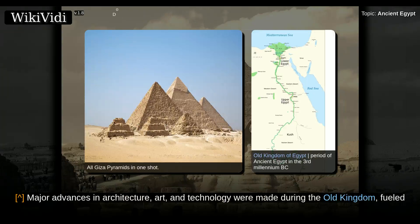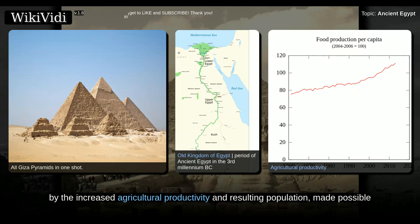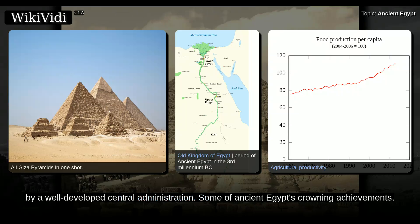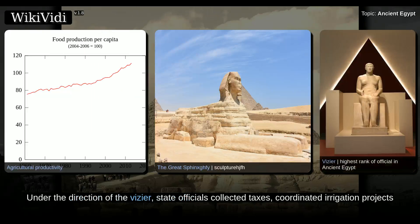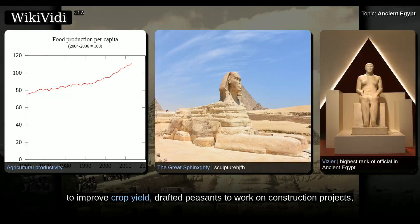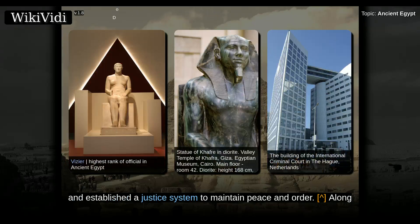Major advances in architecture, art, and technology were made during the Old Kingdom, fueled by the increased agricultural productivity and resulting population, made possible by a well-developed central administration. Some of ancient Egypt's crowning achievements, the Giza Pyramids and Great Sphinx, were constructed during the Old Kingdom. Under the direction of the vizier, state officials collected taxes, coordinated irrigation projects to improve crop yield, drafted peasants to work on construction projects, and established a justice system to maintain peace and order.